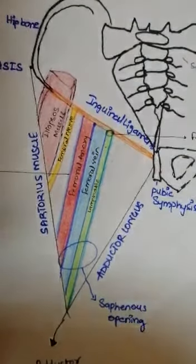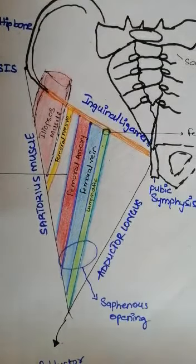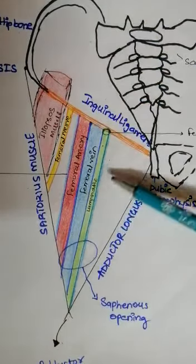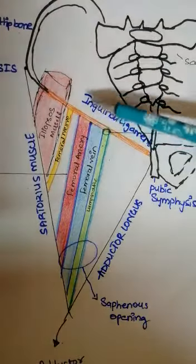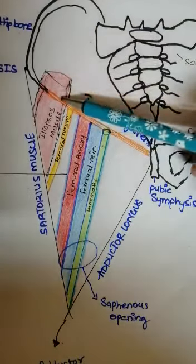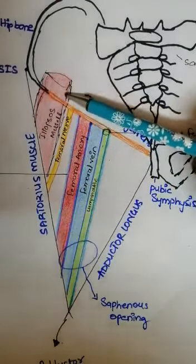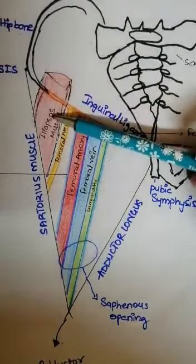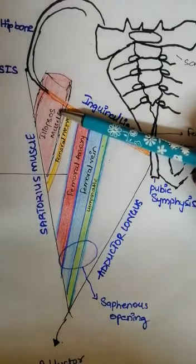Here you can see I have drawn a diagram to make it easier and to better explain the pelvic region and how the arteries and veins of the femoral region continue. The contents, coming from lateral to medial, include the larger muscle that is the iliopsoas muscle. This iliopsoas muscle is a major flexor of the hip joint and forms the lateral boundary of the floor of the femoral triangle.